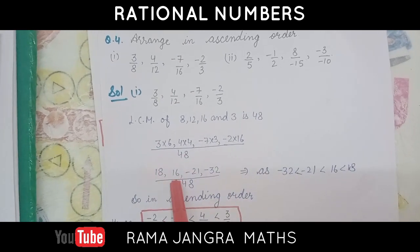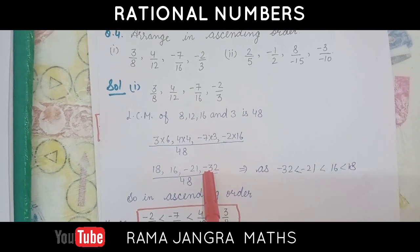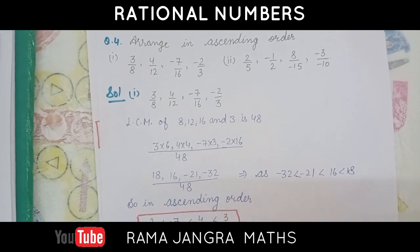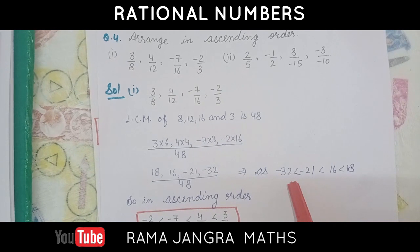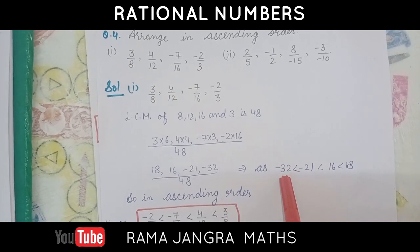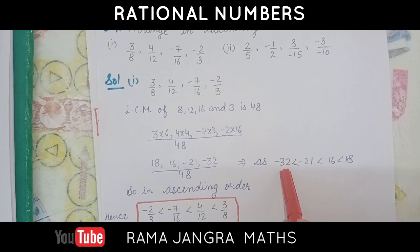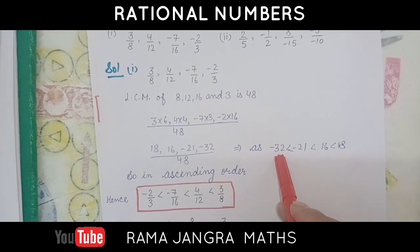Now, we have to compare these, that is in the numerator. So, in ascending order, we have to compare this. So, firstly, what is minus 32? The bigger the negative value, the smaller it becomes.